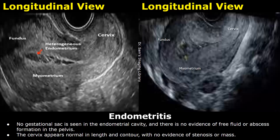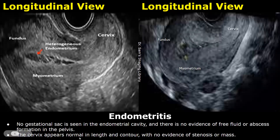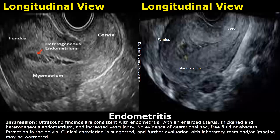After that, you can write: 'No gestational sac is seen in the endometrial cavity, and there is no evidence of free fluid or abscess formation in the pelvis.' In the end, you can write about the appearance of the cervix. In the impression, you can write: 'Ultrasound findings are consistent with endometritis, with an enlarged uterus, thickened and heterogeneous endometrium, and increased vascularity.'